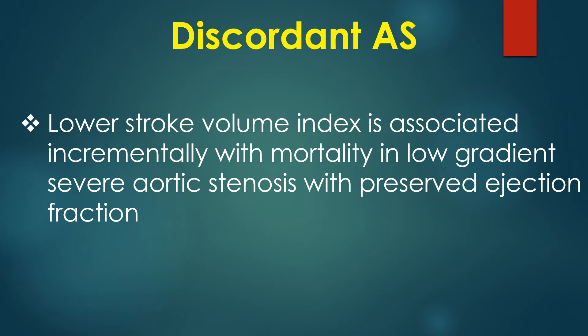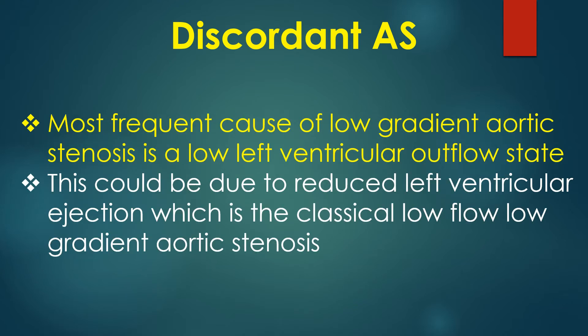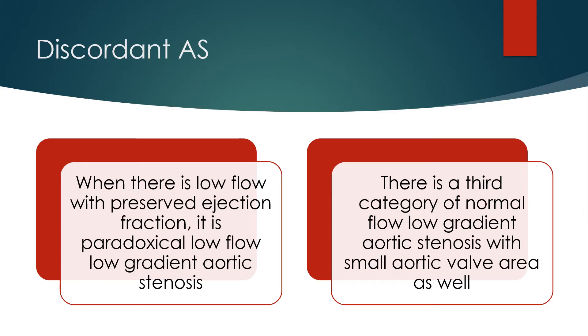Lower stroke volume index is associated incrementally with mortality in low gradient severe aortic stenosis with preserved ejection fraction. The most frequent cause of low gradient aortic stenosis is a low left ventricular outflow state. This could be due to reduced left ventricular ejection, which is the classical low flow low gradient aortic stenosis. When there is low flow with preserved ejection fraction, it is called paradoxical low flow low gradient aortic stenosis.